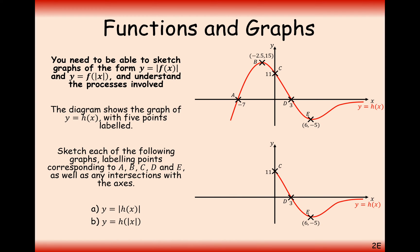For h(|x|): take a copy of the right-hand side — it's exactly the same as what we have — rub out the left-hand side, and make a mirror copy of it on the left. It's going to be perfectly symmetric. The point at (3, something) mirrors to (−3, same y), and the point at (6, −5) mirrors to (−6, −5), because now it's left by 6 instead of right by 6.